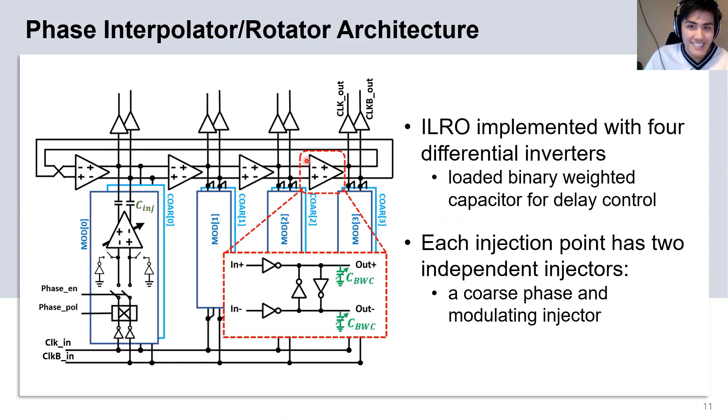The injection locked ring oscillator itself is implemented using a four-stage ring oscillator. At each stage, there is a binary weighted capacitor for frequency control. At each injection point, there is an independent set of coarse phase and modulating injectors.